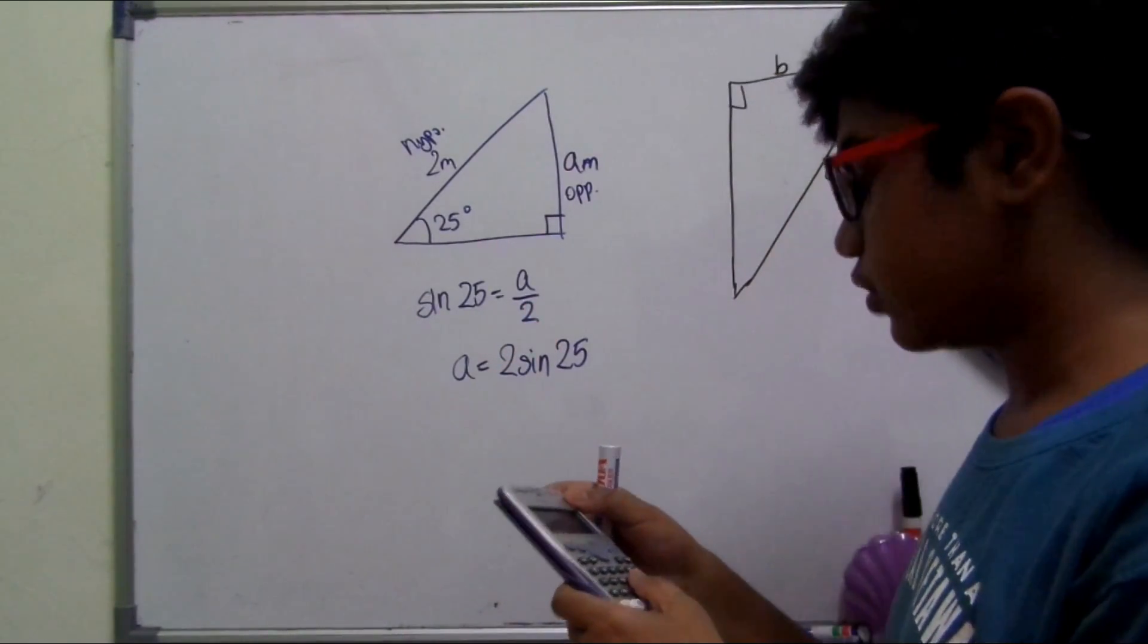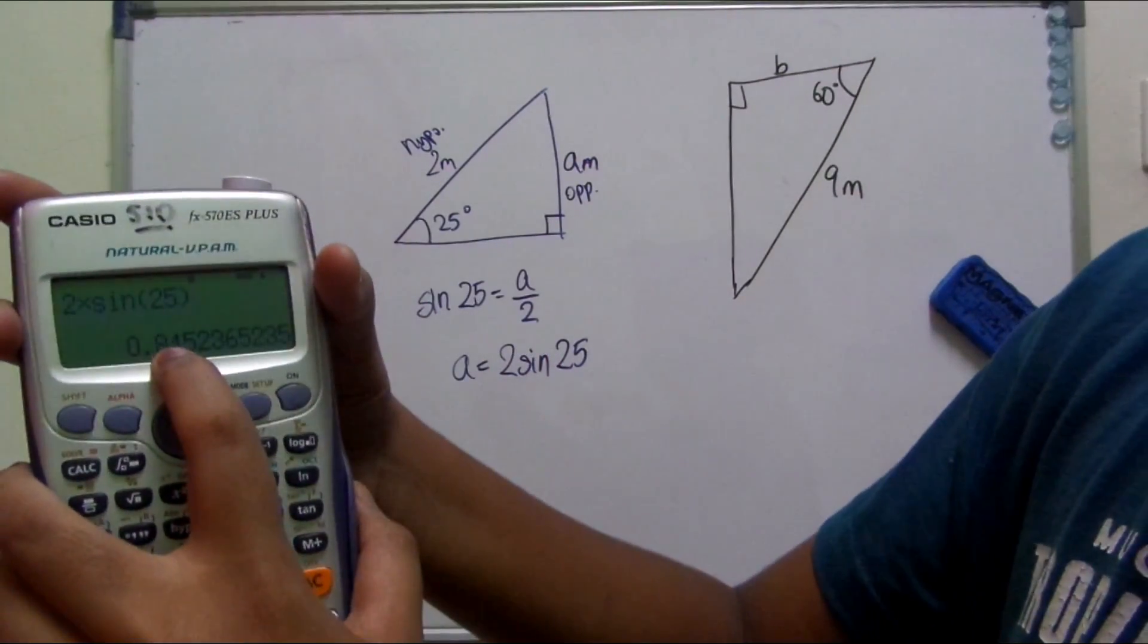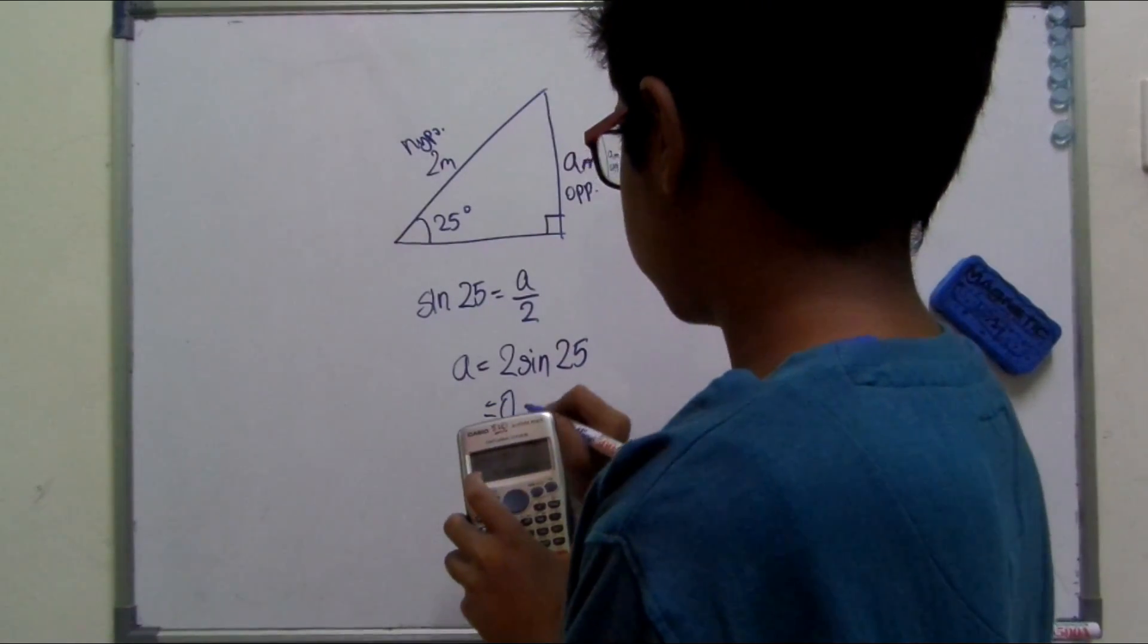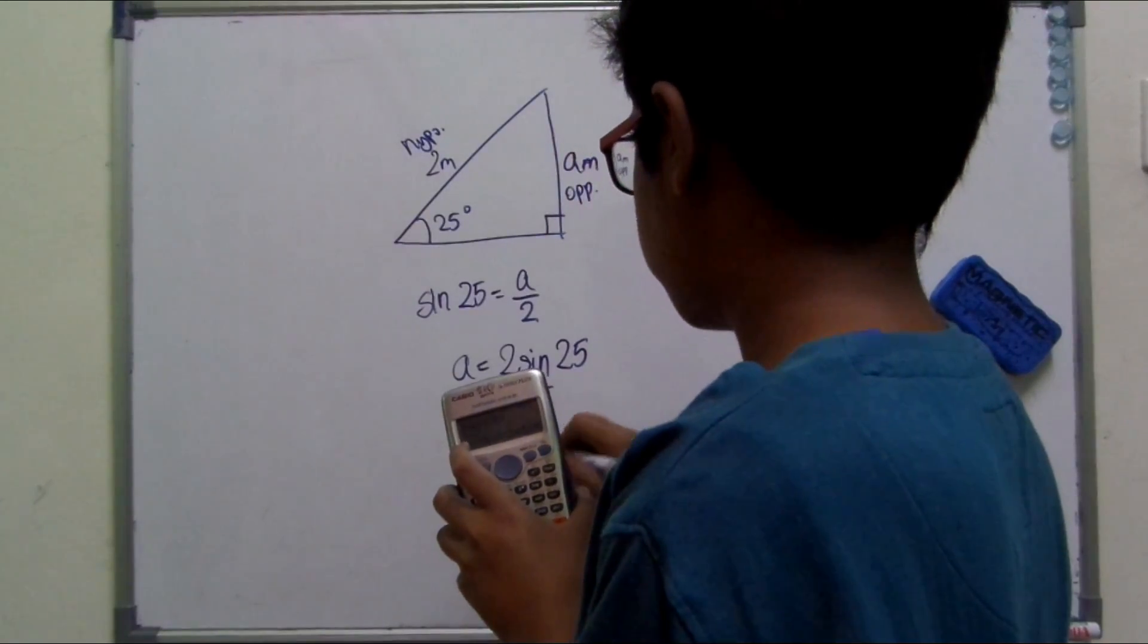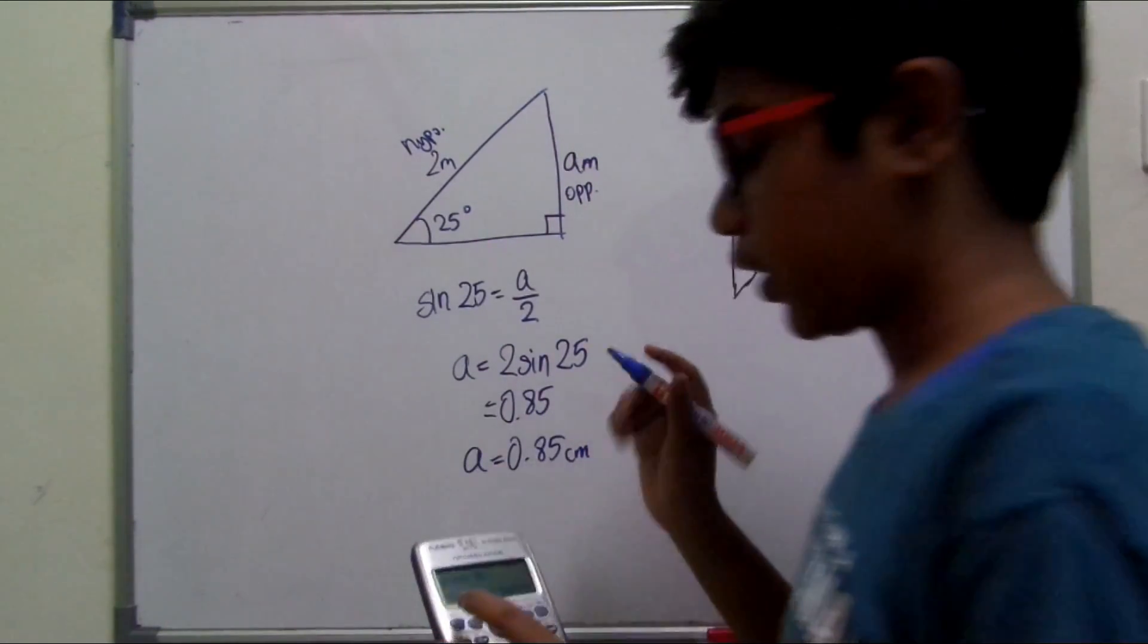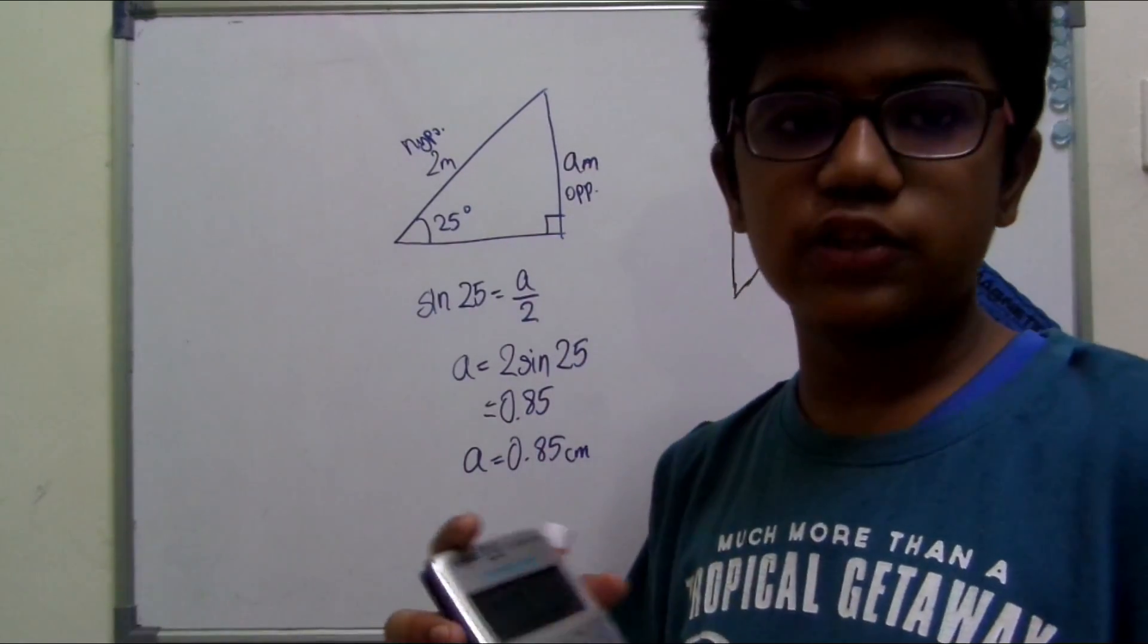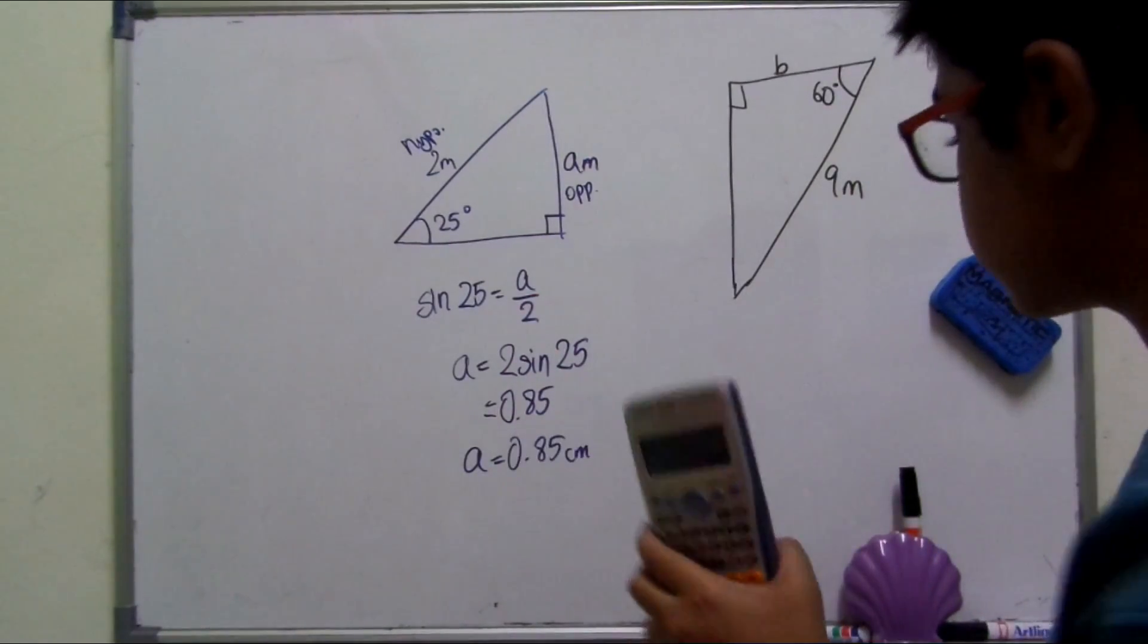And you're not expected to write everything. So write it to two decimal places max, 0.85. So we can conclude that the length of a, which is the opposite, is 0.85 cm. Your calculator can calculate sine 1, sine 2, up to sine 270. So you need a calculator for these sort of sums.